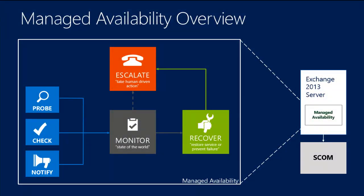Managed availability is a process that runs on the Exchange server under the Exchange Health Service process, and it has three main components that run asynchronously and are constantly doing work. We have the probe engine, which is doing nothing more than gathering data. That data is fed into the monitor engine — you can think of it as a pattern recognition engine that simply analyzes the data obtained from the probes and then takes action on that data. That feeds into our recover engine, which we refer to as responders. Responders are what does the work to recover the system in the event that it is unhealthy. And then lastly, there is the notion of escalation — when the system says, 'We've done everything we could, but we can't solve the issue, we need to get a human involved.' This is where SCOM comes into play — SCOM is our notification engine.